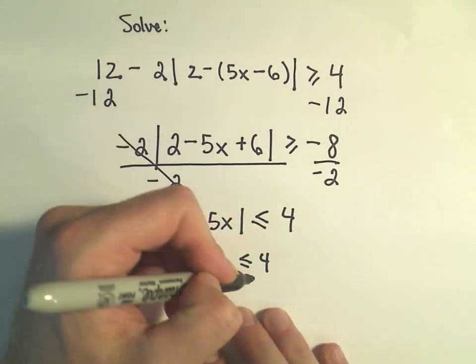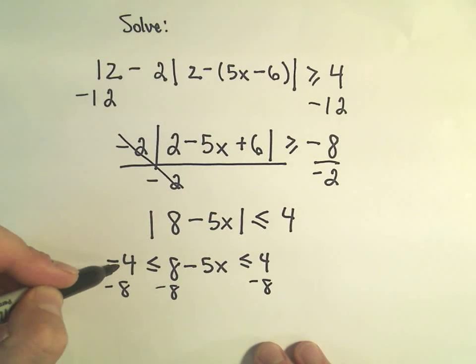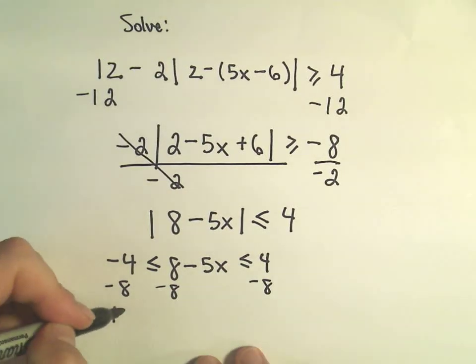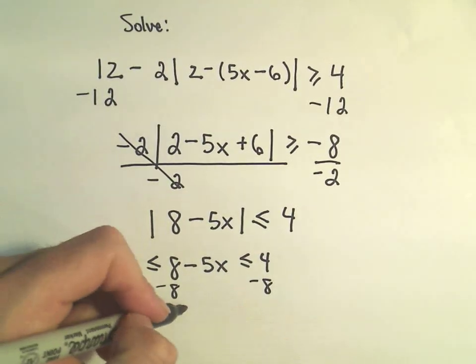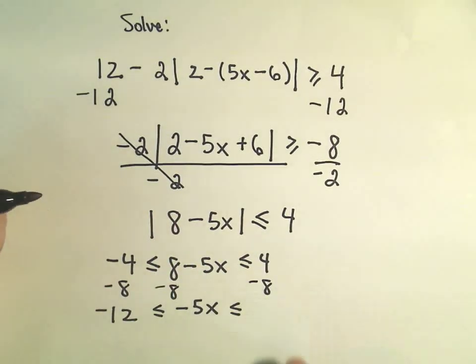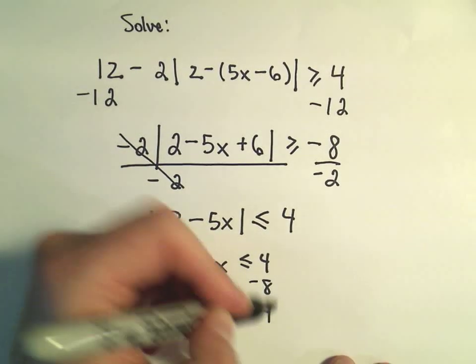Okay, so now I just subtract 8 from each side. So on the left, negative 4 minus 8 is negative 12. We've got negative 5x left in the middle. 4 minus 8 is going to be negative 4.